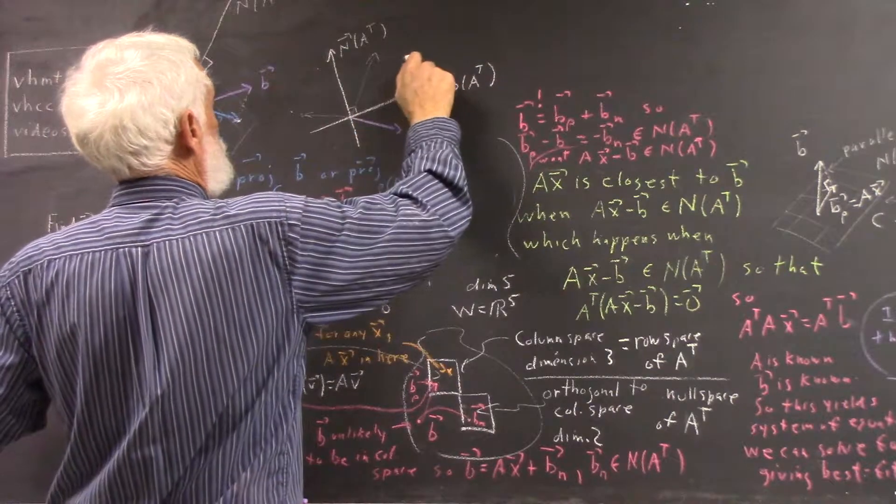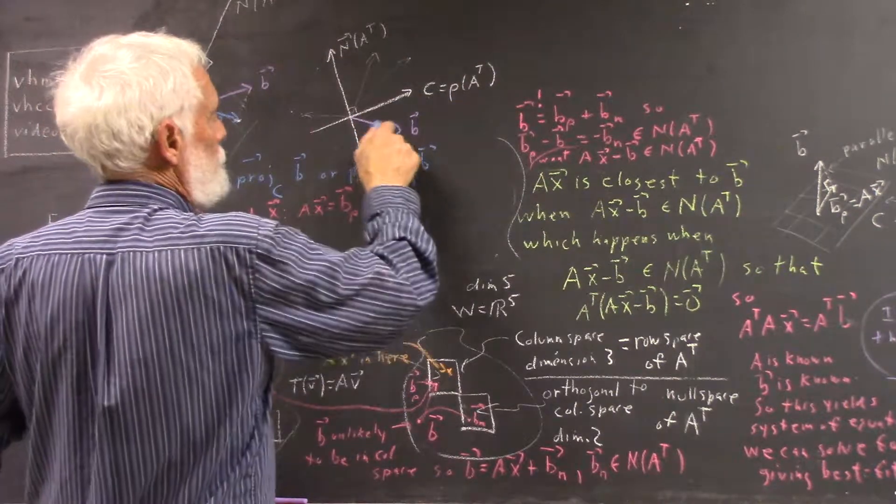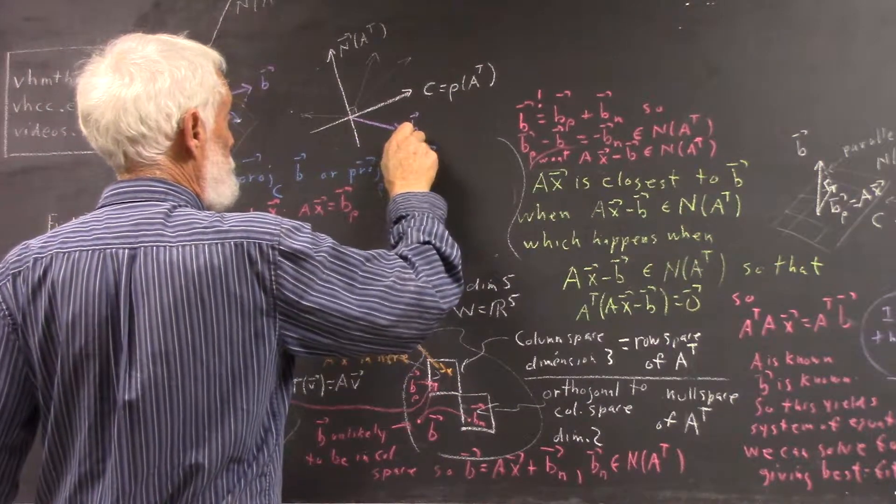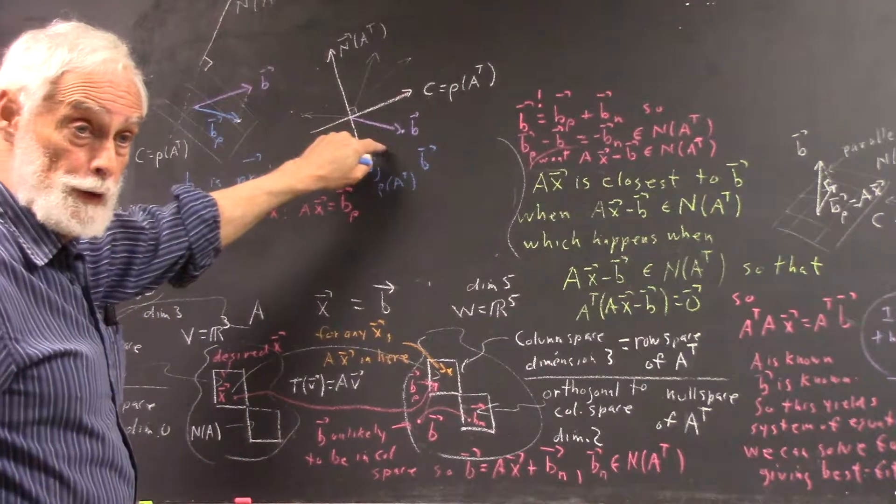And this purple vector that I've drawn here for the B vector is just represented in this space by this point, and I'm still drawing the vector.